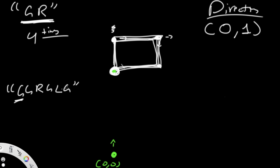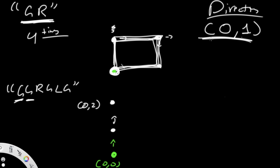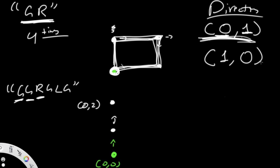Now we want to turn right. We can't use the same direction vector — we need to update it. When turning right, the new x value becomes the old y value, and the new y value becomes the negative of the old x value. So from (0,1), we get (1, -0) = (1,0). Now calling go: position (0,2) + direction (1,0) = (1,2). The y-value stays the same and x increases by 1, which is correct — we moved right by one unit.